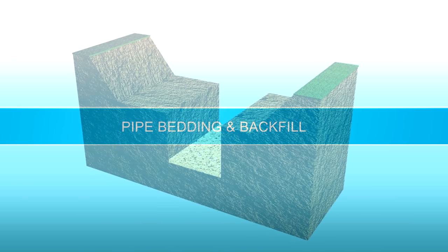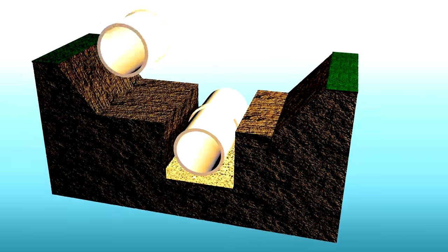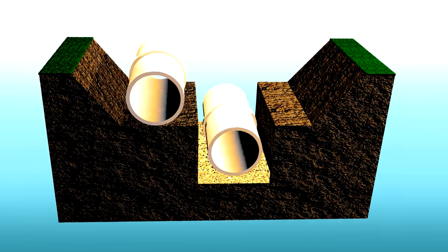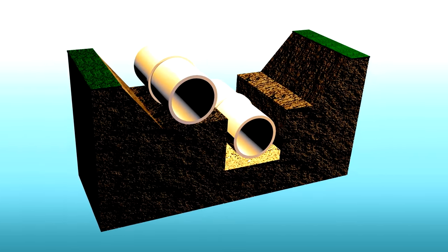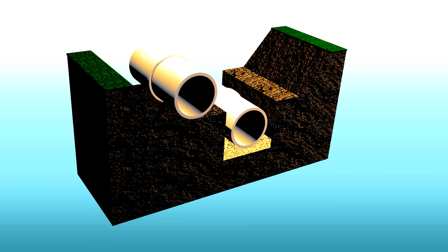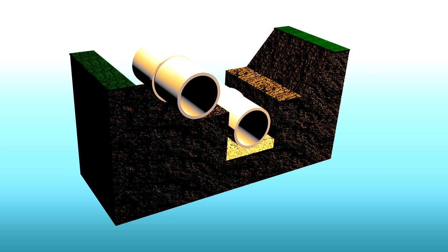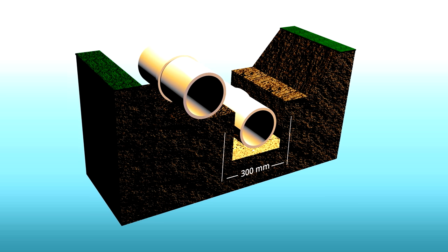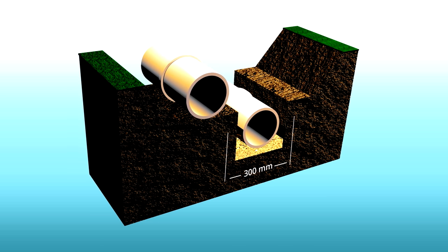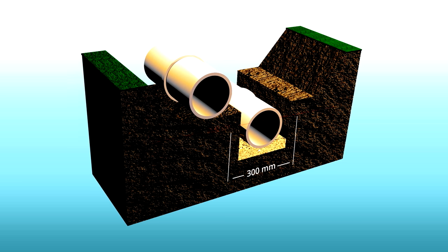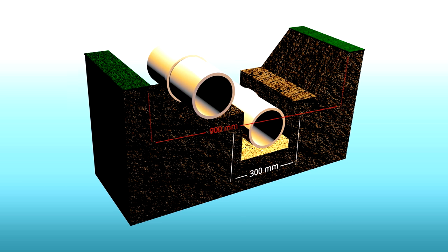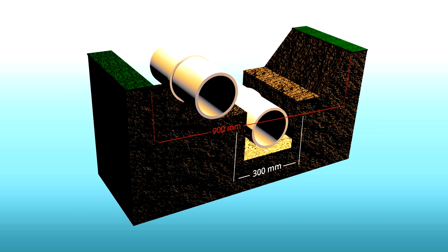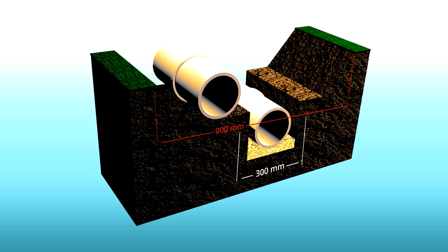Dig your trenches to national building regulations and applicable bylaws. The width of the trench should be as narrow as possible, but at least 300mm greater than the outside diameter of the pipe. Trenches deeper than 900mm must be stepped and suitably shuttered to prevent injury from collapsing sidewalls.